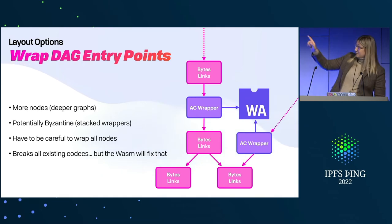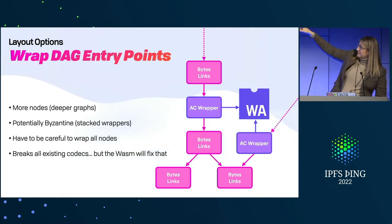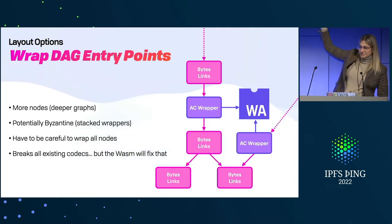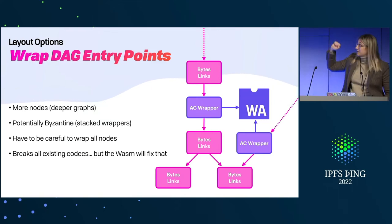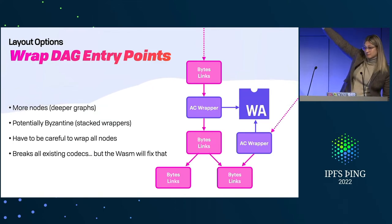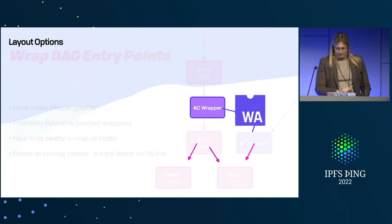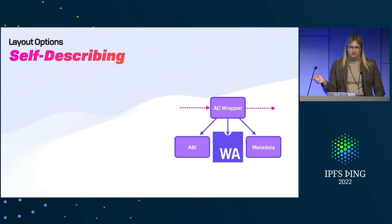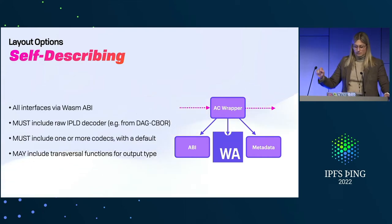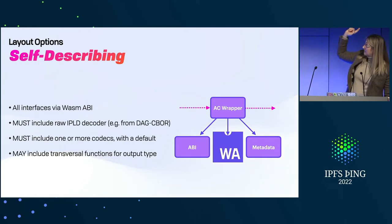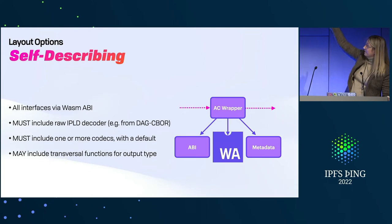The downside is this would break all existing codecs — you wouldn't be able to run DAG-JSON on this because it wouldn't know what these AC wrappers are. But then you would run it with WASM, so it wouldn't matter. These should be self-describing. There's an ABI on this — similar to the last presentation — you have the ABI, the WASM blob, and some other metadata.